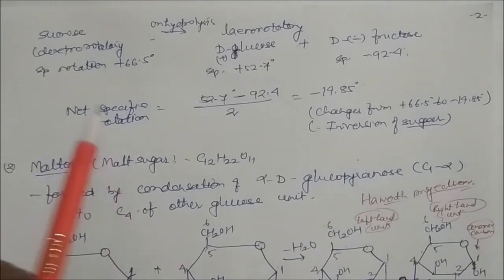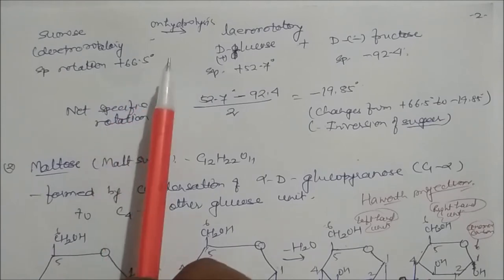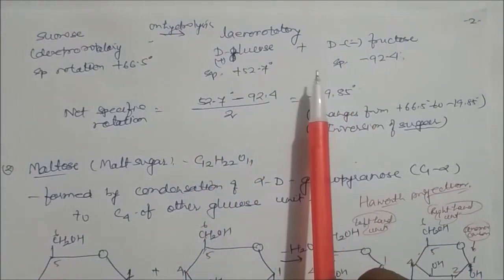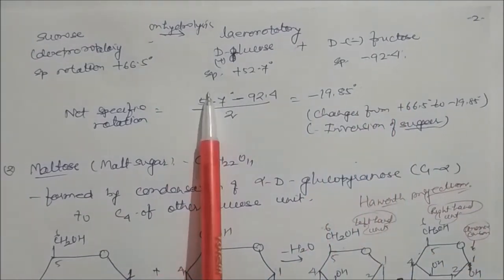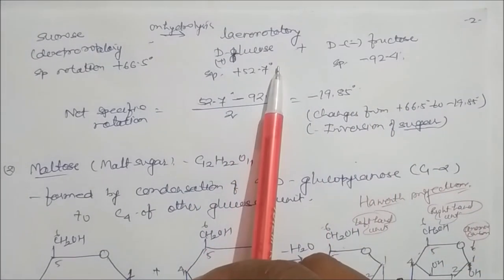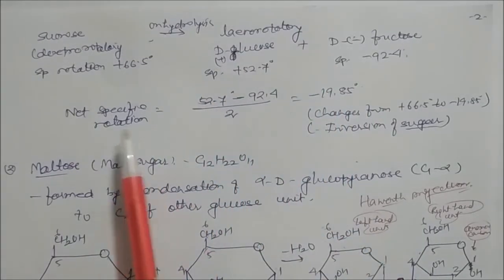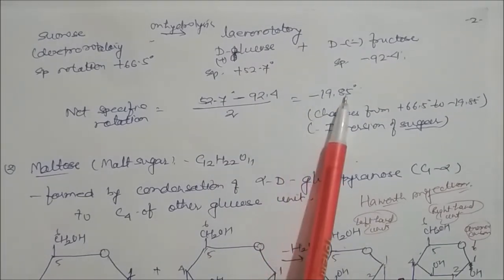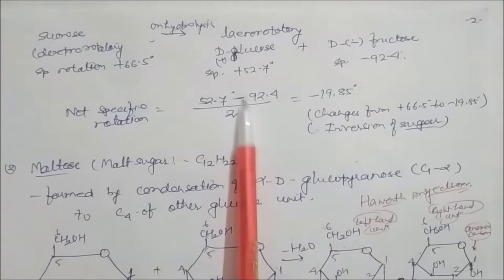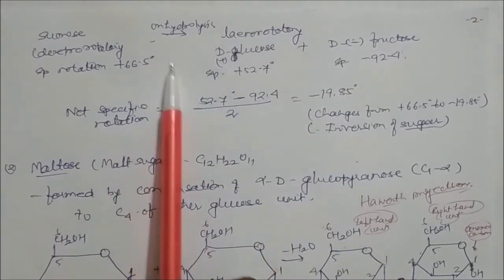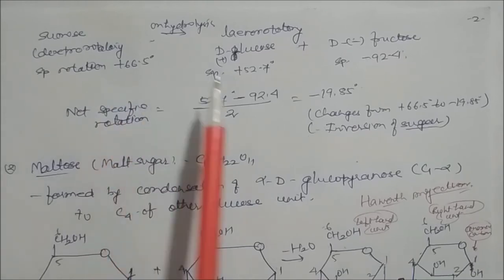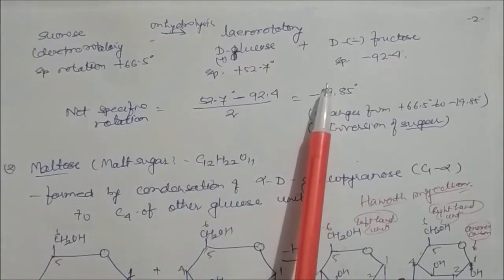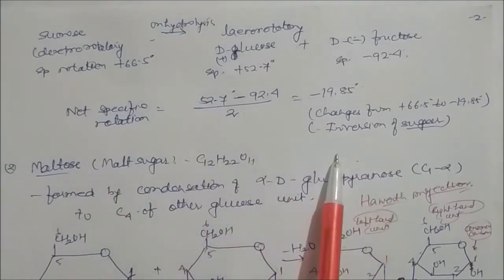Sucrose is dextrorotatory with specific rotation +66.5°. On hydrolysis it gives glucose (+52.7°) and fructose (−92.4°). The net specific rotation of the equimolar mixture is (52.7 − 92.4)/2 = −19.85°. The rotation changes from positive to negative, which is why the hydrolysis product is called invert sugar. This process is called inversion of sugar or inversion process.